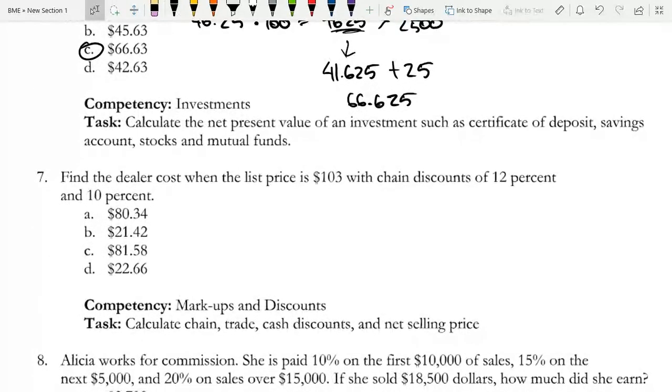The next question is, find the dealer cost when the list price is $103, with chain discounts of 12% and 10%. I encourage that you first try this problem on your own before I explain how to solve it. Okay, I'm going to assume that you had a go on this problem now, and here's how you would go about solving it.